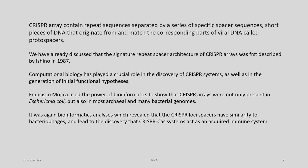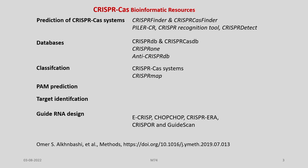Mojica used the power of bioinformatics to show that CRISPR arrays were not only present in E. coli but also in most archaeal and many bacterial genomes. It was bioinformatics analysis again which revealed that CRISPR-Cas9 species have similarity to bacteriophages, and this led to the discovery that the CRISPR-Cas9 system acts like an acquired immune system. This background is discussed just to give an idea that bioinformatics is a very important tool in the discovery as well as progress of CRISPR-Cas9 technology.